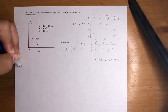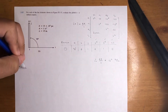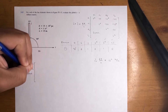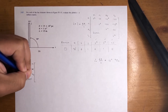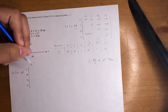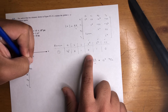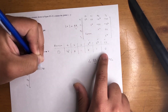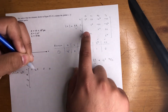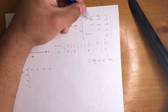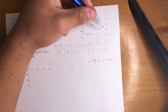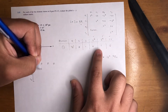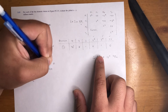K equals EA over L times 10 to the 6. The matrix is organized with DOFs u1, v1, u2, v2. Starting to fill it in: cosine squared is zero, CS is zero, negative cosine squared is zero, negative CS is zero. For v1: sine squared S² is one. It's symmetrical, so CS goes diagonally. Negative CS is zero, negative S² is negative one.